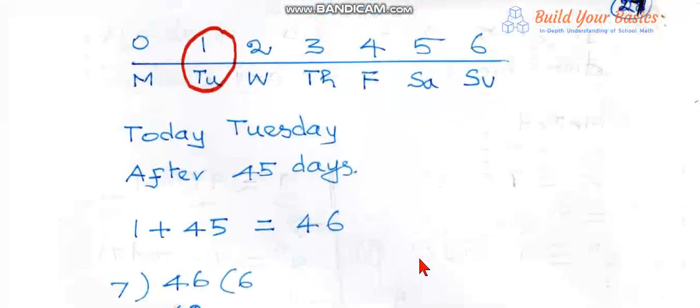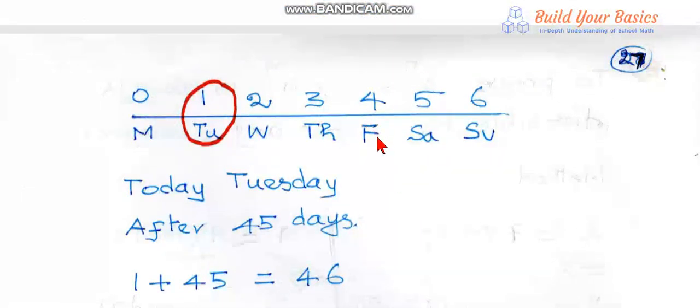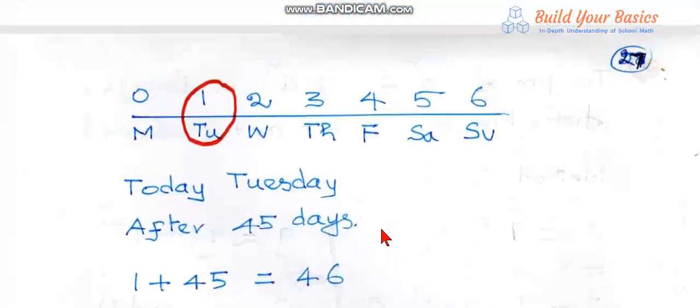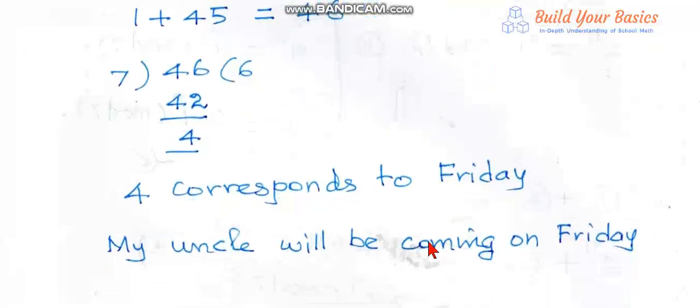The remainder 4 corresponds to Friday. So my uncle will be coming on Friday. Previously we took Tuesday to correspond to 0. Now I have taken Tuesday to correspond to 1. In any way, we will get the same answer. So the problem is over.